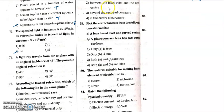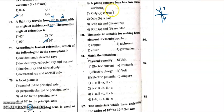Question 74: a light ray travels from air to glass with an angle of incidence of 45 degrees. Since it travels from a rarer to a denser medium, the angle of refraction is less than the angle of incidence. The angle of incidence is 45 degrees, so the refraction angle must be less than 45 degrees. The second option is the correct answer.